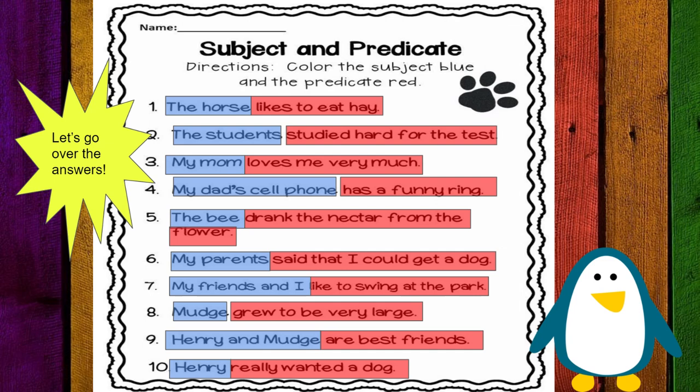My dad's cell phone has a funny ring. My dad's cell phone is the subject. Has a funny ring is the predicate. The bee drank the nectar from the flower.